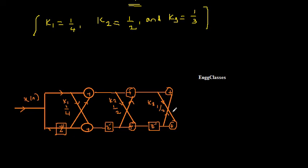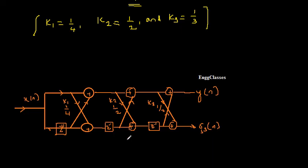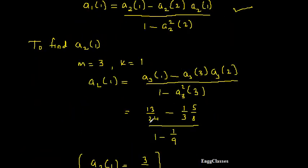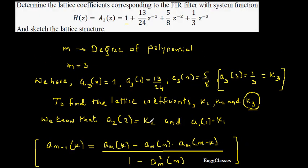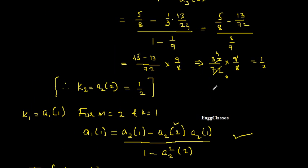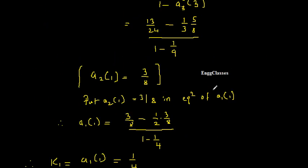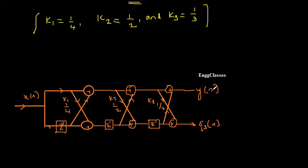The output is y(n); the intermediate signal is called g3(n). This is the final 3-stage lattice structure. In an exam the numerical may require a 2-stage or 4-stage structure — based on that, draw accordingly. I hope you have understood; if there are any doubts please let me know in the comment section. Subscribe to NG Classes for more videos on Digital Signal Processing. Thank you everyone for watching.